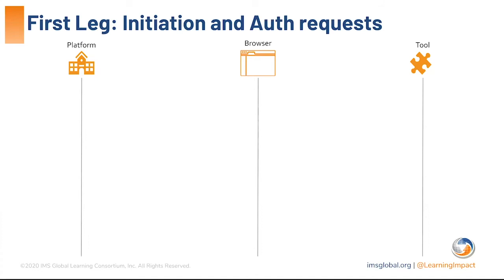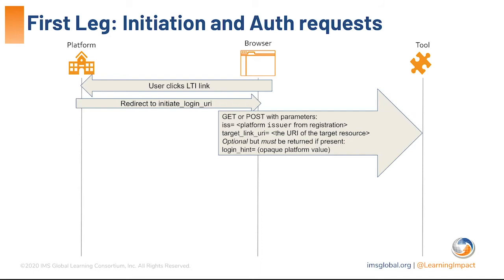The first leg: the user clicks an LTI link in the browser, which goes to the platform. The platform redirects to the login initiation URI — information exchanged at registration time — and this is always the same URL for a given registration. It can be a GET or a POST. The data sent is minimal: there's no signed security information or personal identifying information. It only includes the issuer, so the tool can know which platform is sending this, and the target link URI — the URI of the resource to be loaded after the second leg.